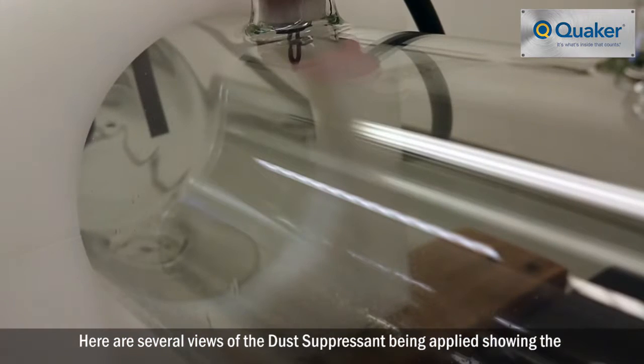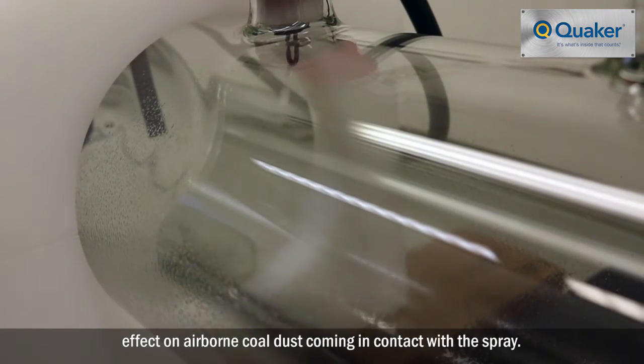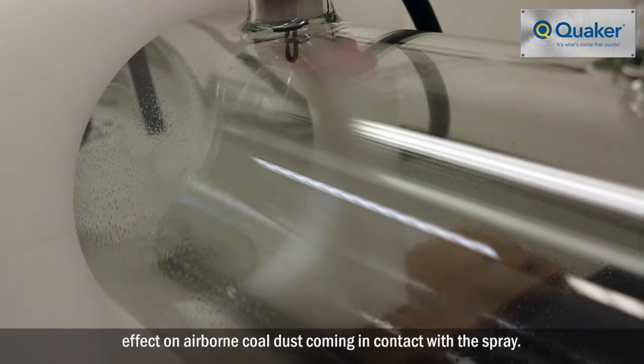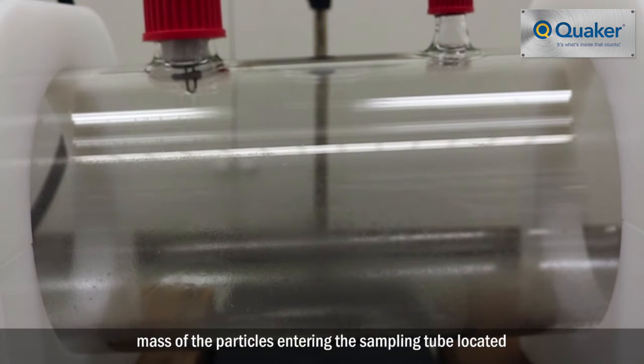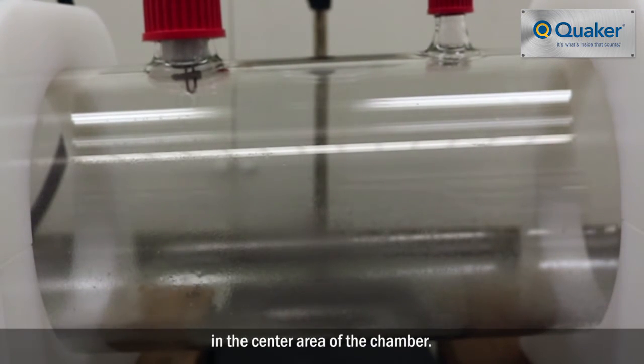Here are several views of the dust suppressant being applied showing the effect on airborne coal dust coming in contact with the spray. During the entire operation of the dust chamber, the monitor is measuring the mass of the particles entering the sampling tube located in the center area of the chamber.